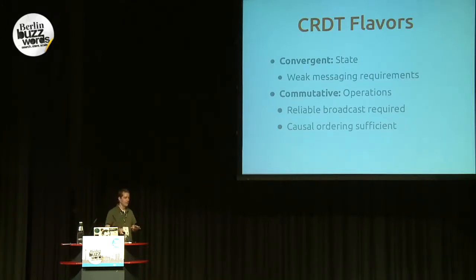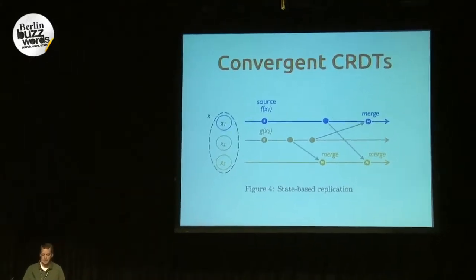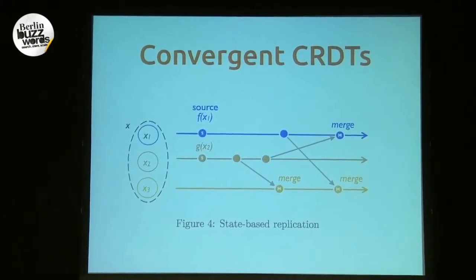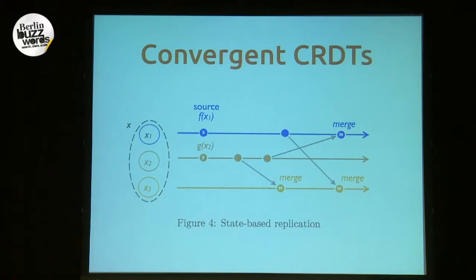Let's look at what convergent CRDTs look like in pictures. Basically on the top blue line, we have three replicas of our data type. At the source, we apply function f, which modifies the state. Concurrently at x2, the local state there is modified by function g. Then each of those replicas forwards their new state to the other replicas, and those replicas merge. In the end you actually get the combination of both operations applied. So as long as all of the replicas eventually receive states that include all previously happening mutations, they will converge on the same value.